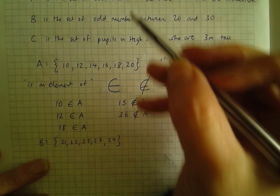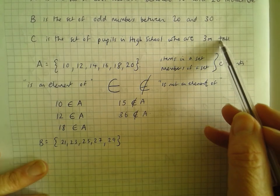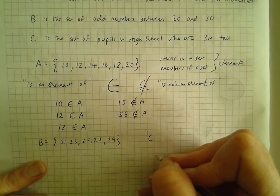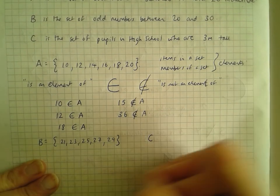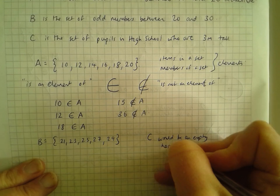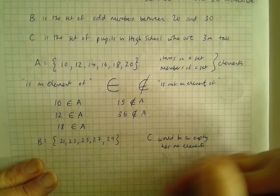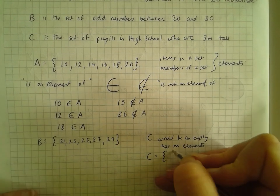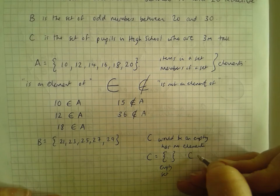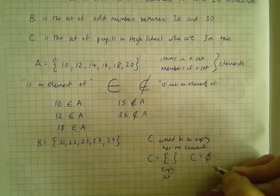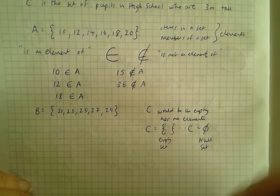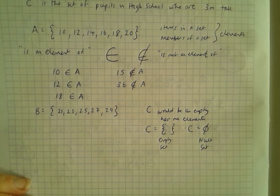Set C is the set of pupils in high school who are three meters tall. I don't know any pupils who are three meters tall, so set C would be empty — an empty set with no elements. We write that as C equals the empty set symbol, or C equals the null set. Null means null and void — there's nothing in it. So a set that has no elements is a null set or empty set.